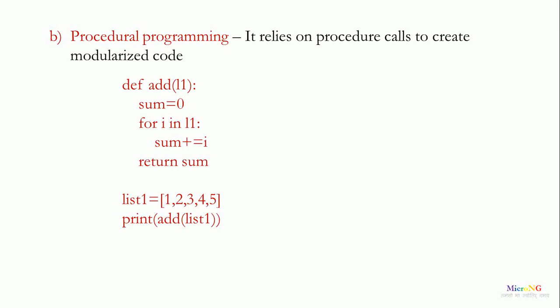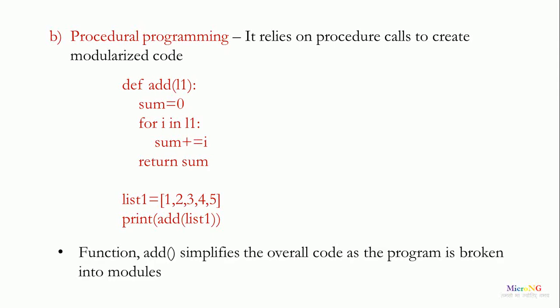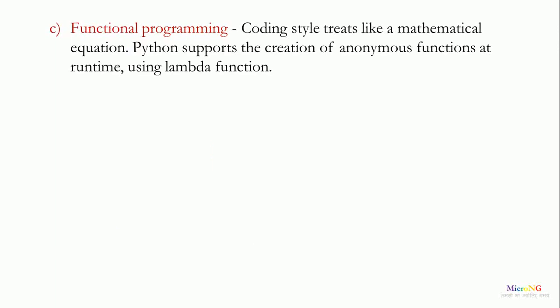In this example, we are using the concept of function. A new function is defined by using keyword DEF. The function name is add and the list is taken as a parameter. Inside the function, by using a for loop, each individual elements will be retrieved from the list and keep on adding it to the sum variable and from the function, the sum value will be returned. Outside the function, the function has been called in the main module by using the function name and the parameters. We can see that the function add simplifies the overall code as the program is broken into different modules. So, Python also supports the procedural programming with the concept of functions.